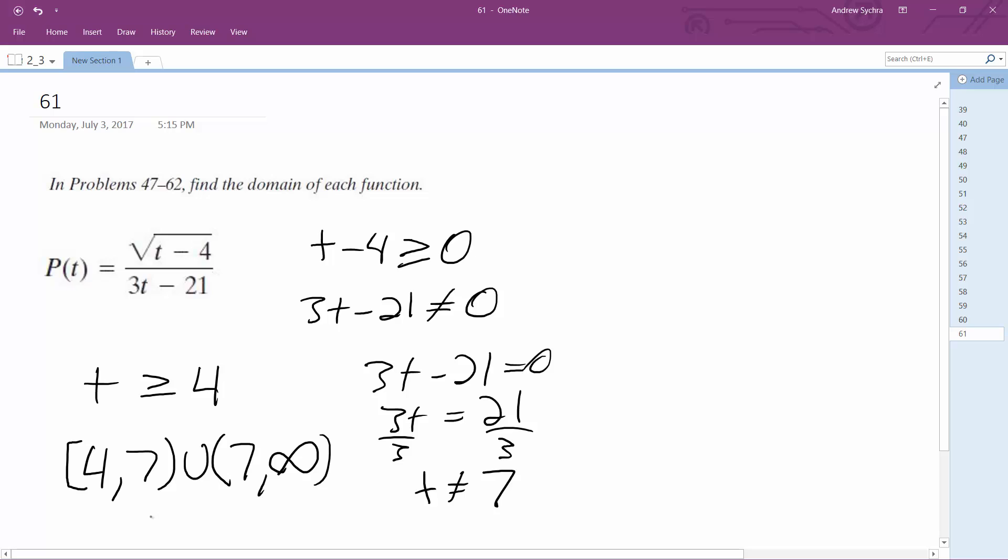Hopefully that makes sense. So t is greater than or equal to 4, but t cannot equal 7. It's kind of like a double case because you've got the numerator and denominator there. That's how you solve that.